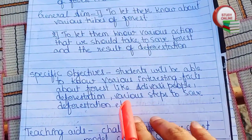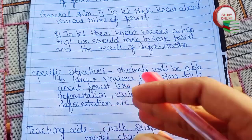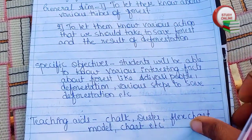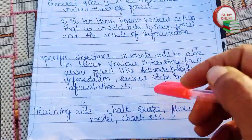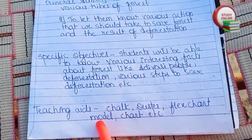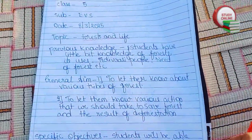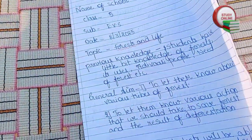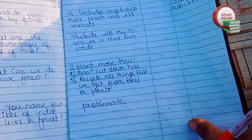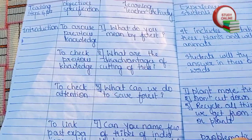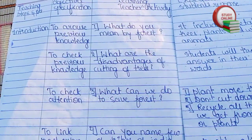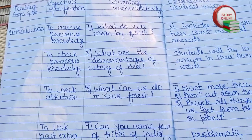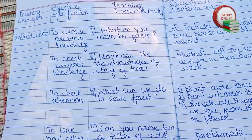We have to write what we basically want to teach to students — like teaching them about Adivasi people, deforestation, and various steps to save forests. For teaching aids, we write whatever teaching aids we are going to use. Here you can see the introduction part.